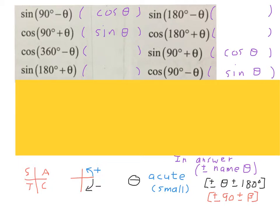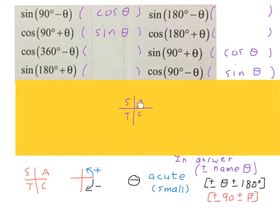For sine(180 minus theta): start at north, go 180 minus an acute angle — we are in the second quadrant. From the CAST diagram, sine is positive in the second quadrant, so the answer is positive sine(theta). To summarize: with 90 plus or minus, cosine becomes sine and sine becomes cosine. Then check the quadrant to determine the plus or minus sign. The original ratio name decides the sign.